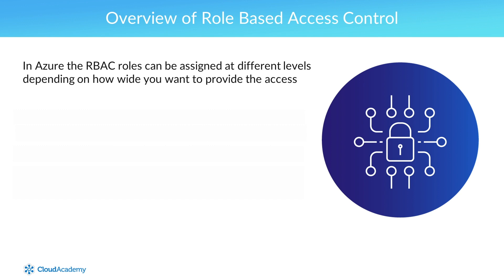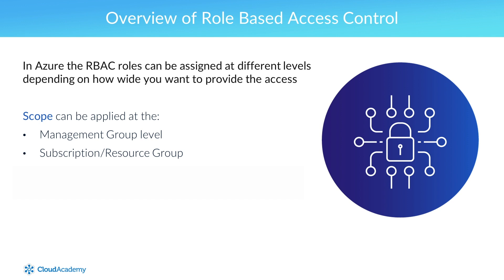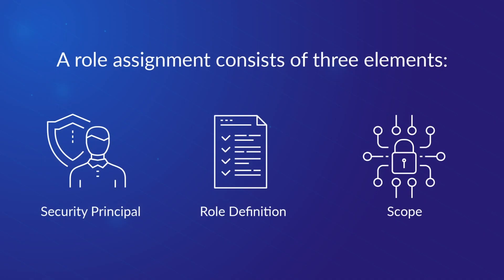The last element is scope. In Azure, RBAC roles can be assigned at different levels depending on how wide you want to provide the access. Scope can be applied at the management group level, or at the subscription, or at the resource group, all the way down to individual resources. Combining these three elements makes role assignments work by defining the role definition that will apply to a security principal, which is then assigned to a scope.